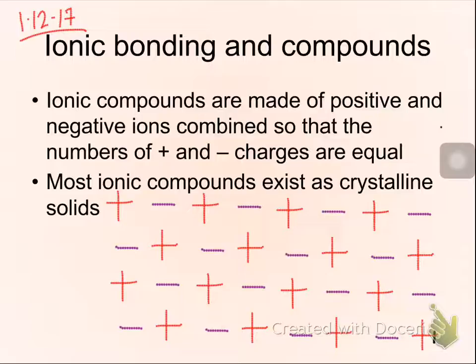These are things where there is such a big difference in electronegativity, there's no sharing to be had. It's grab and go. One element happily ditches and throws overboard their electrons. Another element happily picks them up. So they're big clusters of positive and negative ions arranged so you have a balanced number of positive and negative charges. That's what makes it neutral overall.